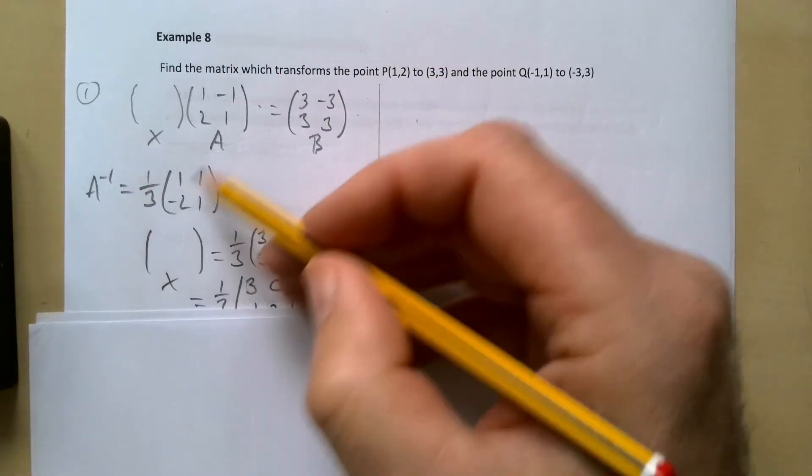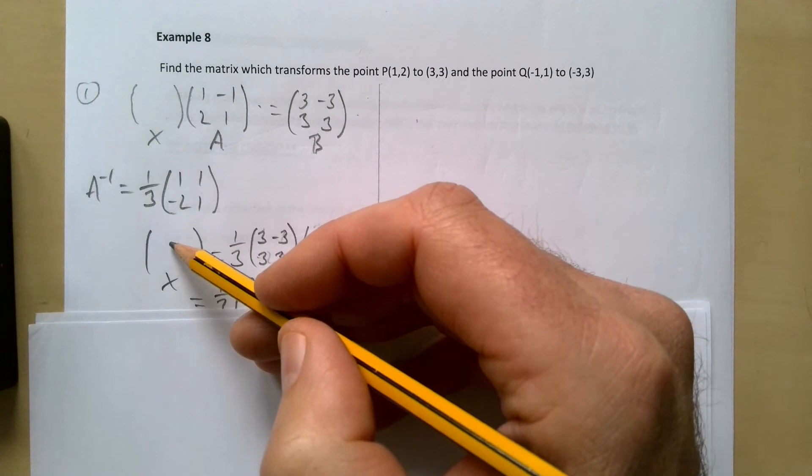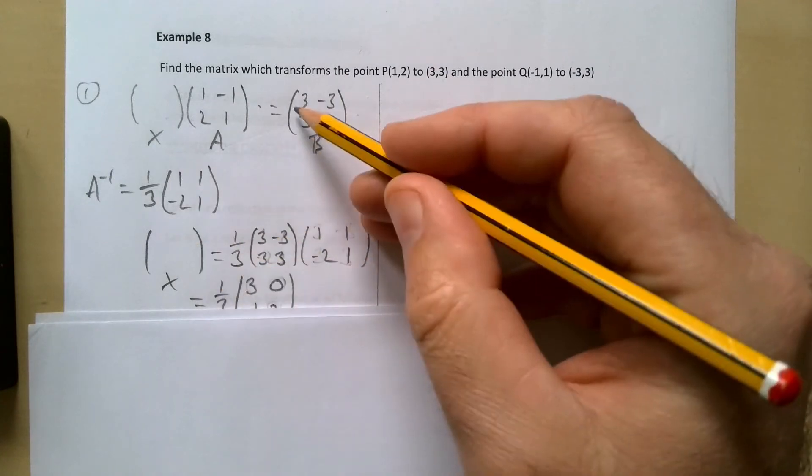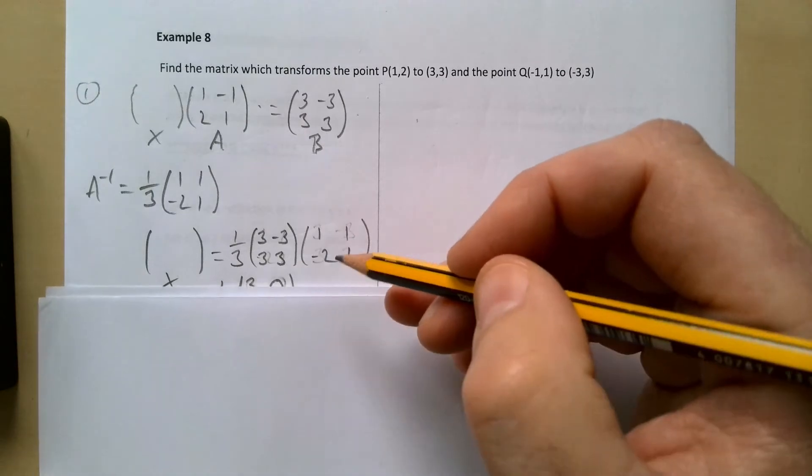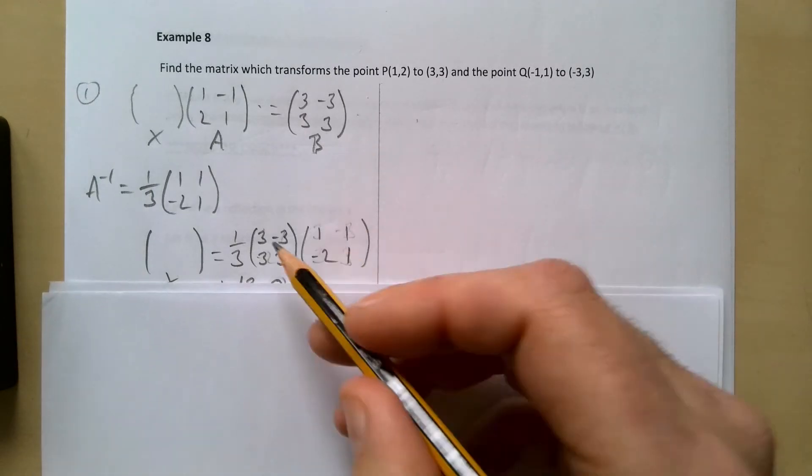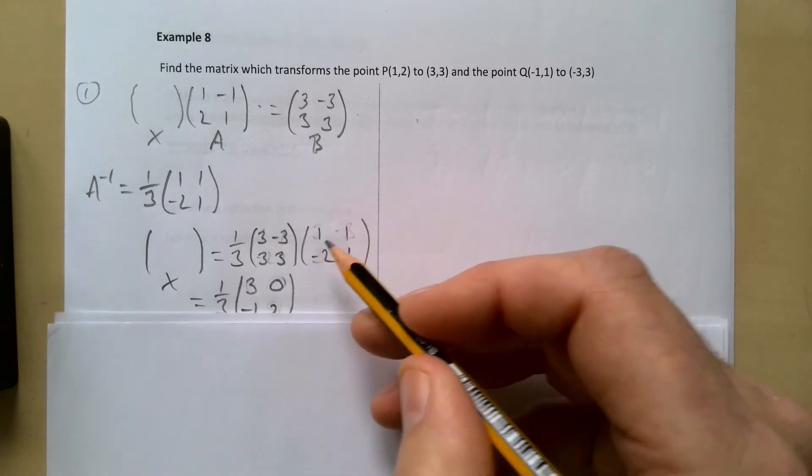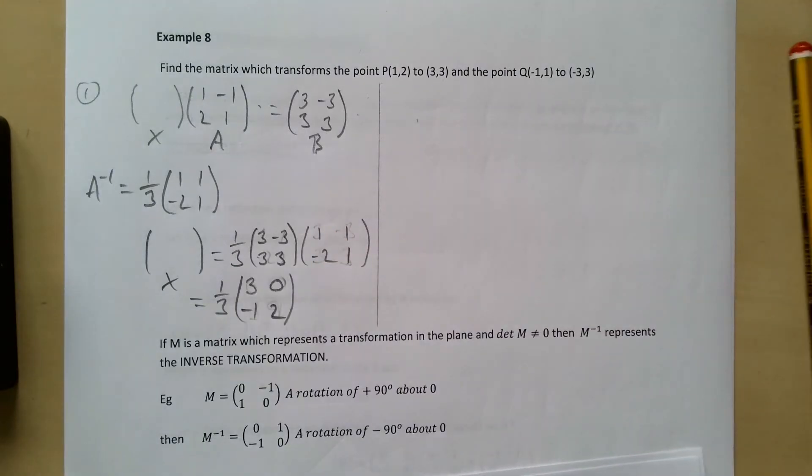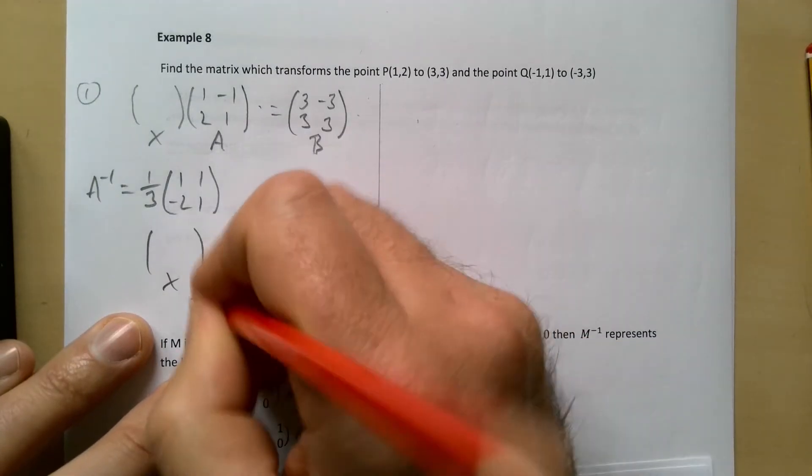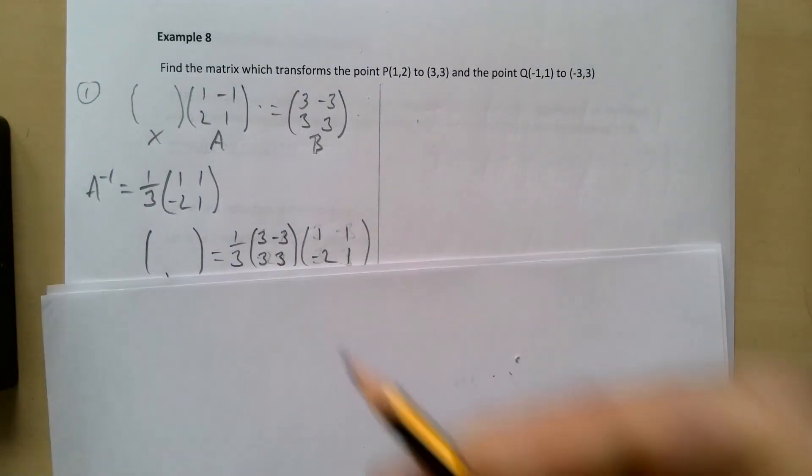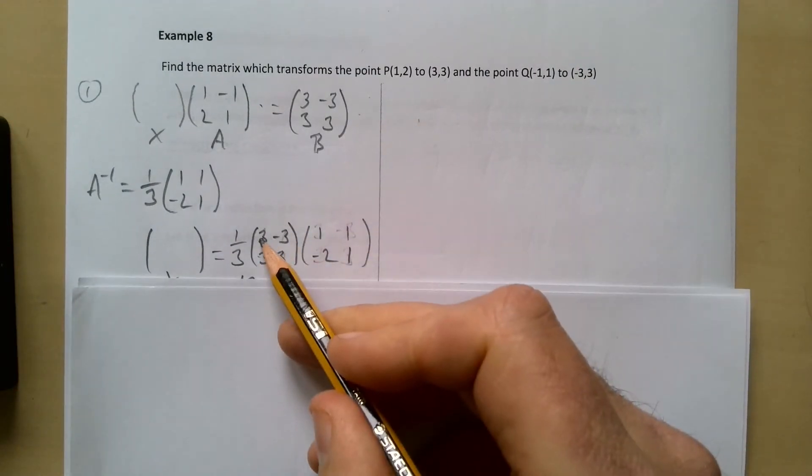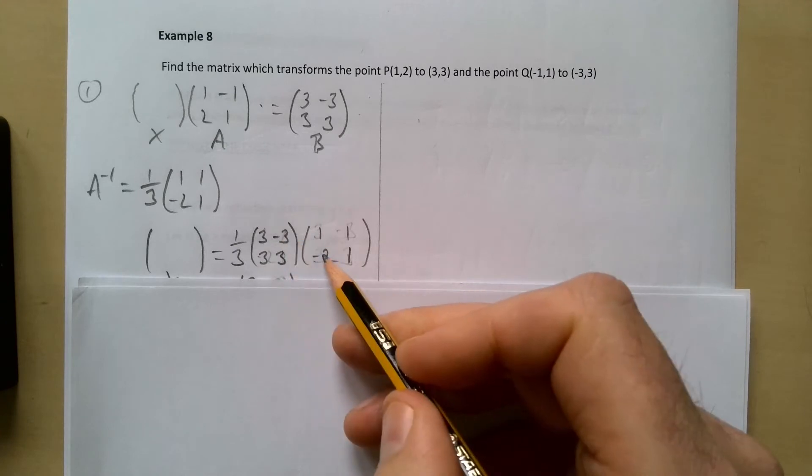I'm going to put the A inverse here, the A inverse here. If I set it up like that now I can bring my third right to the front. So this should give me the X on its own and then I've got one third times the matrix [3 -3; 3 3] times [1 1; -2 1]. Let's just run through this to make sure we get the right thing.